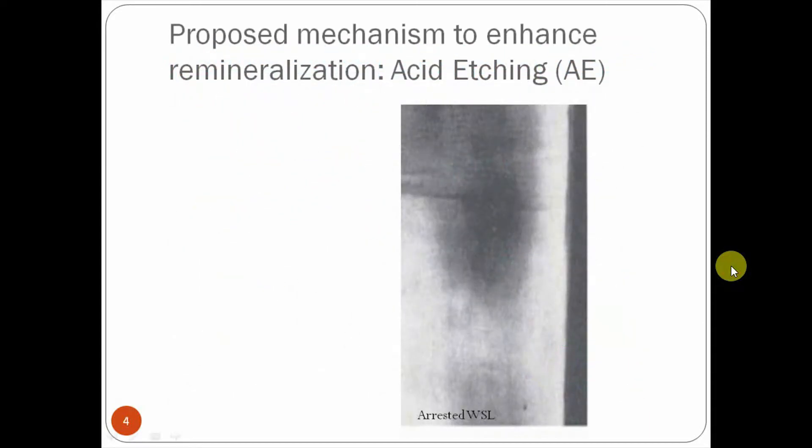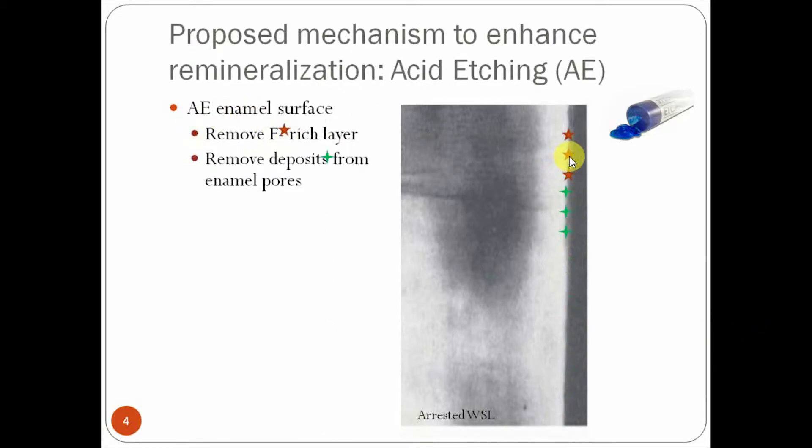Slide 4. This is a proposed mechanism to enhance remineralization of acid etching AE. In this picture, I show you an arrested white spot lesion. And we're going to talk about what happens when you put acid etching onto the surface. When we remove the fluoride rich layer, when we put acid etching, we also remove deposits from enamel pores. We're going to talk about calcium fluoride and other aggregates.